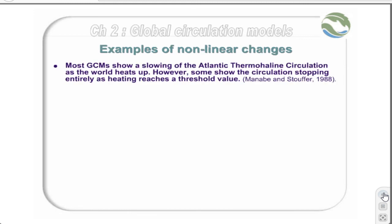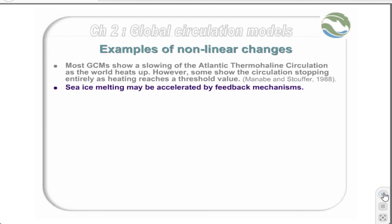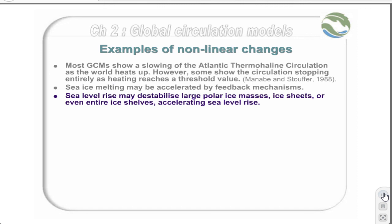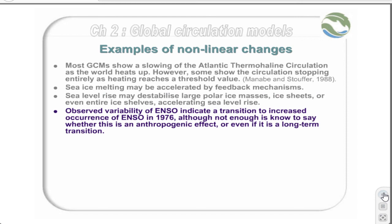Most GCMs show a slowing of the Atlantic thermohaline circulation as the world heats up. However, some show the circulation stopping entirely as heating reaches a threshold value. The shutdown does not occur abruptly, but the speed with which it stops — in the range of decades to centuries — is affected by the rate of heating. Sea ice in the northern seas is set to reduce, and this process may be accelerated by feedback processes associated with the concurrent drop in salinity and the reduced albedo of polar regions. Furthermore, sea level rise may destabilize large polar ice masses, ice sheets, or even entire ice shells, accelerating the rate of sea level rise. The observed variability of ENSO — the El Niño Southern Oscillation — indicates a transition to increased occurrence of ENSO in 1976, although not enough is known to say whether this is an anthropogenic effect, or even if it is a long-term transition.